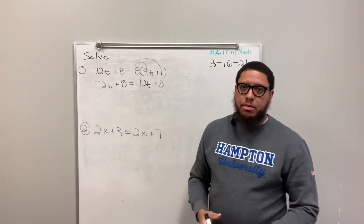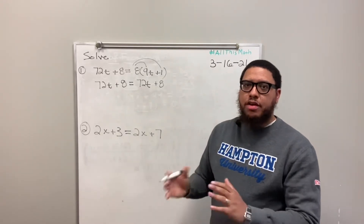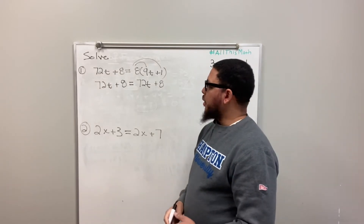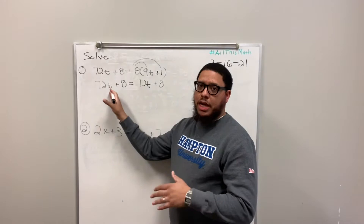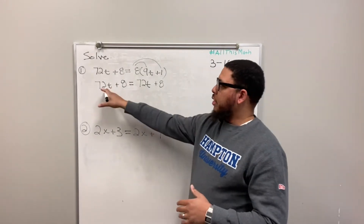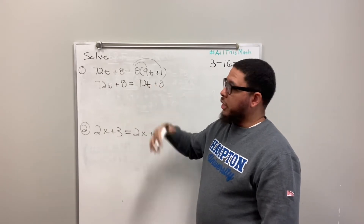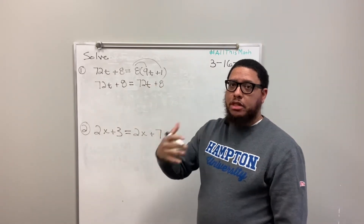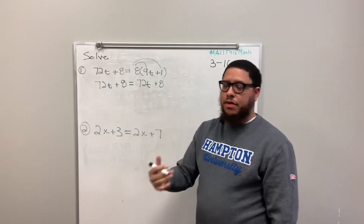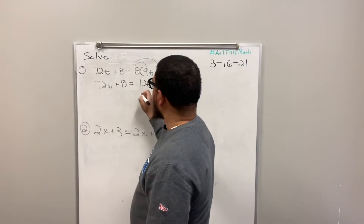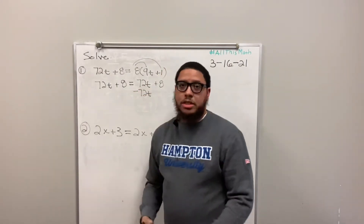The more formal way most textbooks show it is using the inverse property. If I decide I want t on the left side of the equal sign, the 72t over here is fine, but I need to get rid of the 72t on the right. The opposite of positive 72t is negative 72t, so I'm going to subtract 72t on the right side.